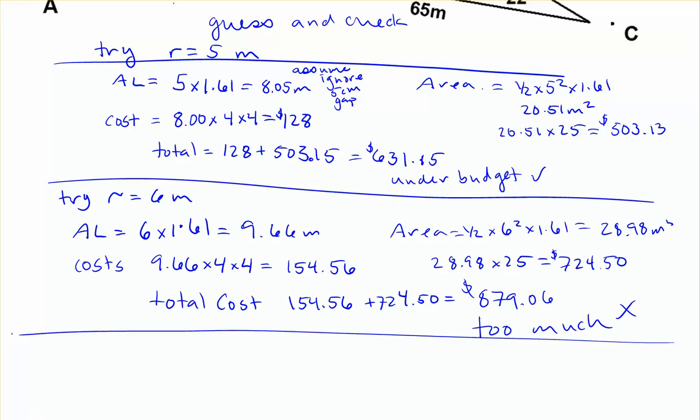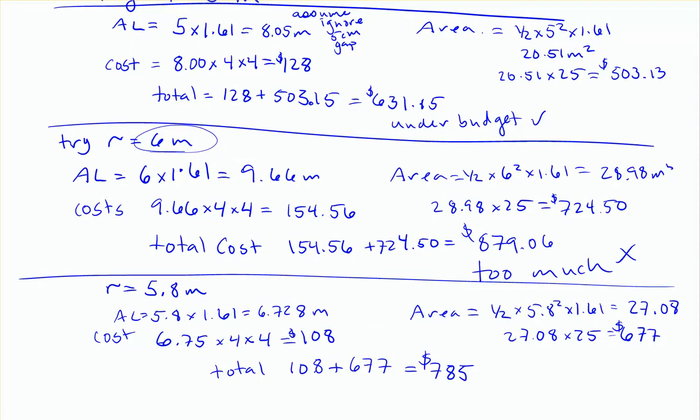So I could try something like, well, 879 was actually pretty close. It's not too far above 850. So I'm going to guess something closer to 6 meters, because that was my last guess. So I don't know. Let's try a radius equal to 5.8 meters, and see what happens. So if we go through that same process. Okay, so to save some time on that, I just went ahead and wrote in the working.